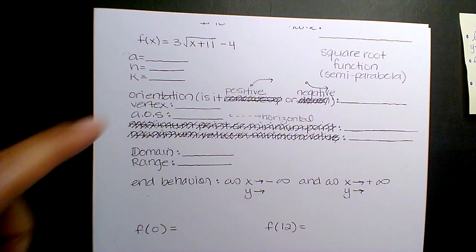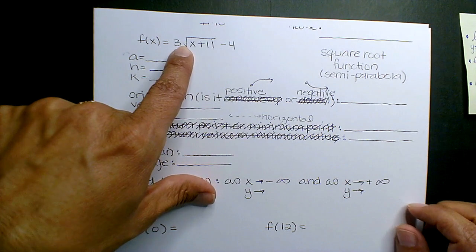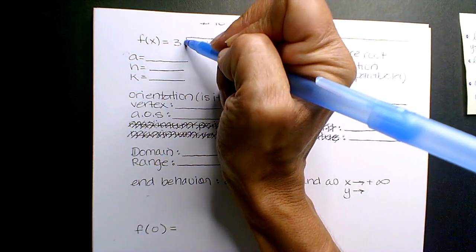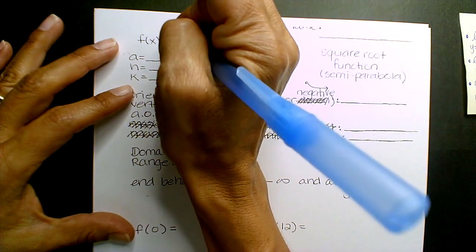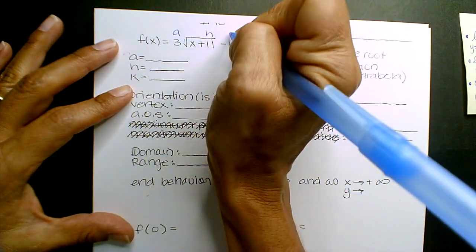A square root function. Remember, you don't ever see the 2, but the 2 is really there. That's why we're squaring. It still behaves as A, H, K.